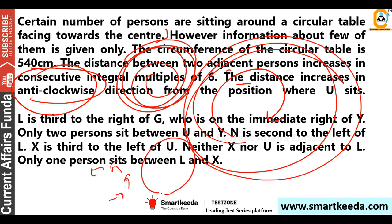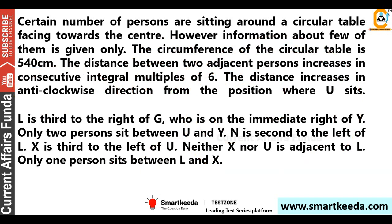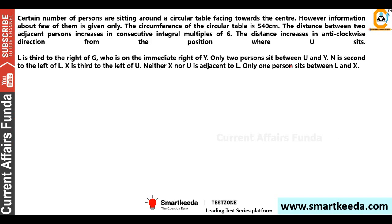When you increase in the anti-clockwise direction in multiples of 6, it is not necessary that it will start from 6. If the multiple is 6, maybe it will start from 24 — so 24, 30, 36, 42 — or it may start from 12: 12, 18, 24. You will not know how many persons there are or where the numbers start, since no information is given about some persons.